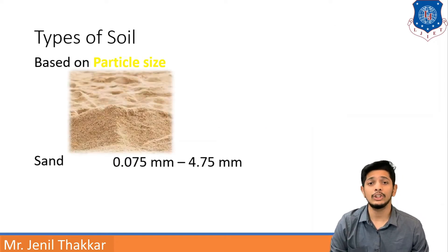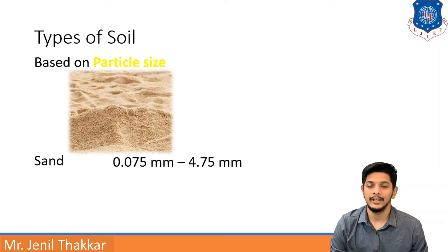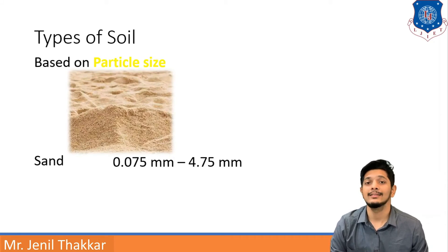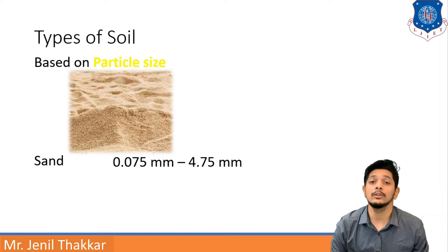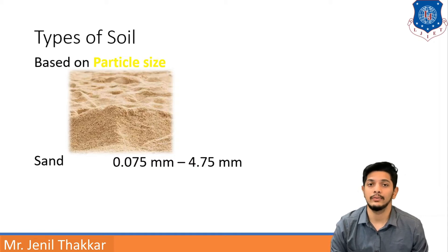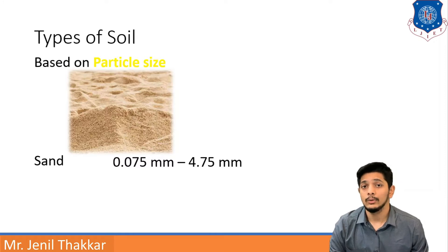The most commonly used construction material is sand. Sand ranges from 0.075 mm to 4.75 mm in particle size, and you know the widespread usage of sand in different construction areas.